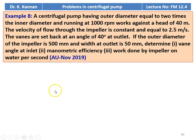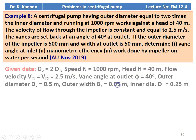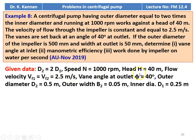Example number 8 from the November 2009 question paper. A centrifugal pump having outer diameter equal to 2 times the inner diameter, running at 1000 RPM, works against a head of 40 meter. The velocity of flow through the impeller is constant at 2.5 meters per second. Vanes are set back at an angle of 40 degree at the outside. Outer diameter of the impeller is 500 millimeter and width at the outlet is 50 millimeter. Determine the vane angle at the inlet, manometric efficiency, and work done by the impeller on water per second. Given: D2=0.5 m, D1=0.25 m, N=1000 RPM, H=40 m, VF=2.5 m/s, phi=40°, B2=0.05 m.